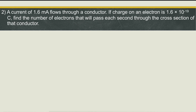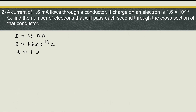Second problem: a current of 1.6 milliampere flows through a conductor. Current is 1.6 milliampere, charge on an electron is 1.6 × 10⁻¹⁹ coulomb. Find the number of electrons that will pass each second through the cross section of that conductor. Time is 1 second and we are asked to find the number of electrons N. Pause the video and think which formula you will apply.